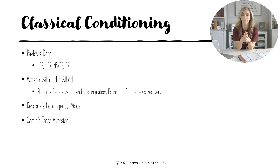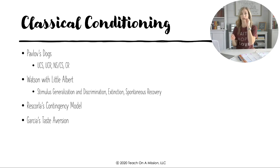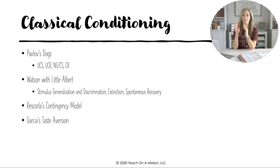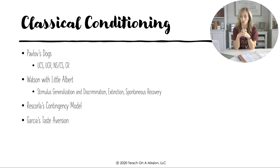The phase where Pavlov's dogs had the bell and food paired repeatedly, and Watson with Little Albert had the mouse paired with the gong repeatedly — that phase of pairing two stimuli is called acquisition, where the subject is making the association between the two stimuli.